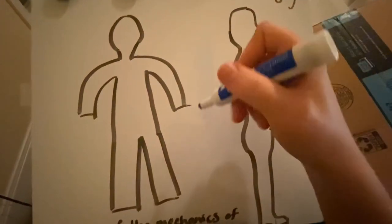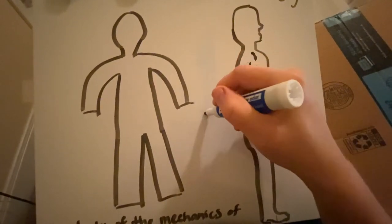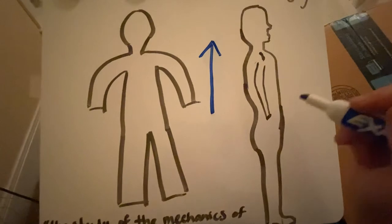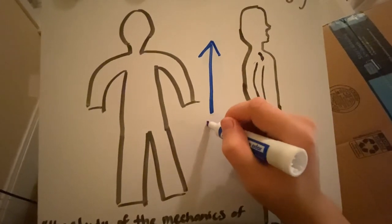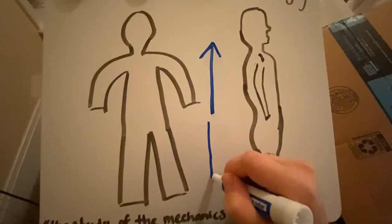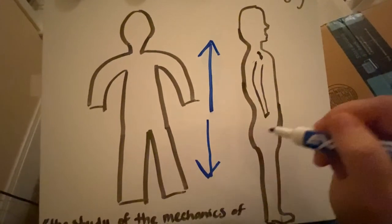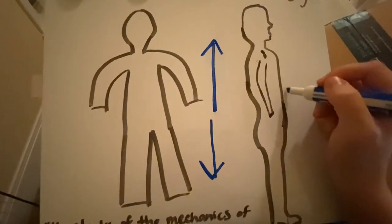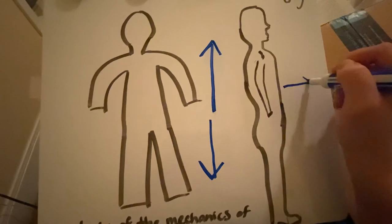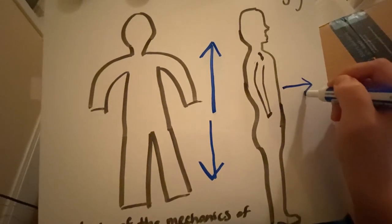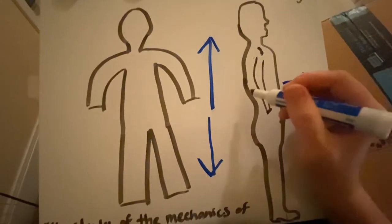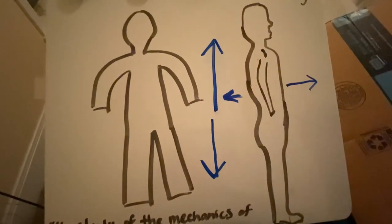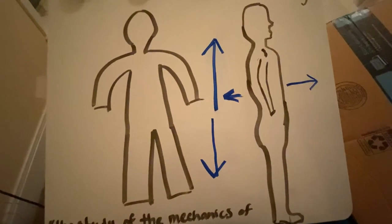If we go somewhere towards the head, we call that superior. If we go down towards the bottom, we call that inferior. Whenever we say the forward side, that's going to be anterior or ventral. And whenever we go backwards, that's called posterior or dorsal.